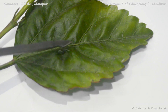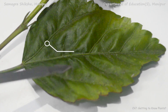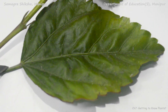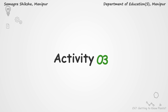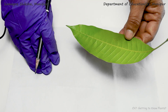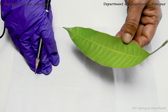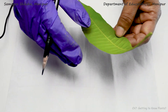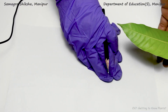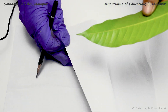So students, we have a lot of activities that we have to do in the classroom. We will have an activity to make sure that the leaf impression is made.